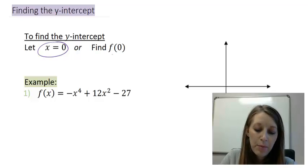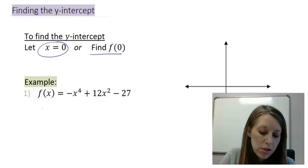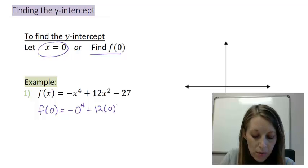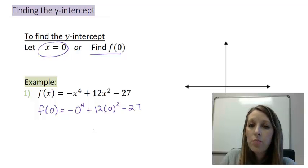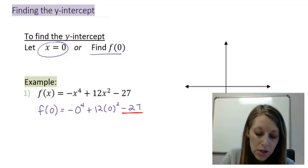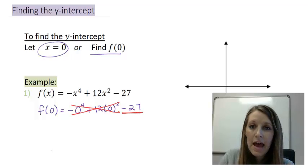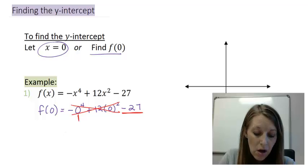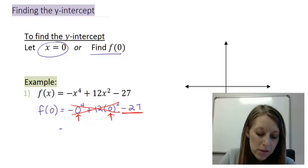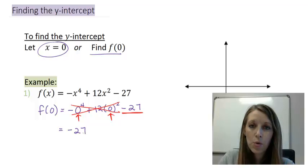So in this example, we need to figure out f of 0. So let me just go ahead and plug that in. That gives me negative 0 to the 4th plus 12 times 0 squared minus 27. Now if your polynomial is in expanded or multiplied out form, such as this one here, you will always end up with your constant term, meaning the term that doesn't have any variables involved, because all the variables become 0 and those all cancel out. So my answer in this example is negative 27.